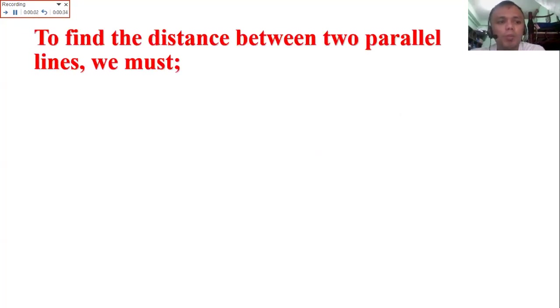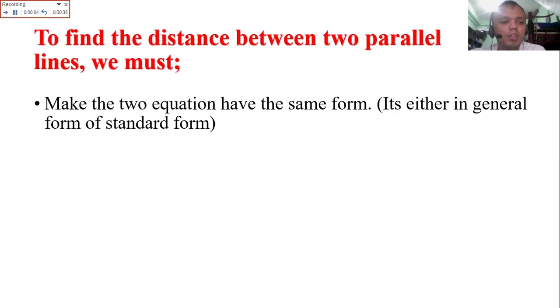To find the distance between two parallel lines, we must make the two equations have the same form. The equation should have the same form, either in general or standard form. It's better if they're all in standard form. Then identify the values of A, B, C sub 1, and C sub 2.